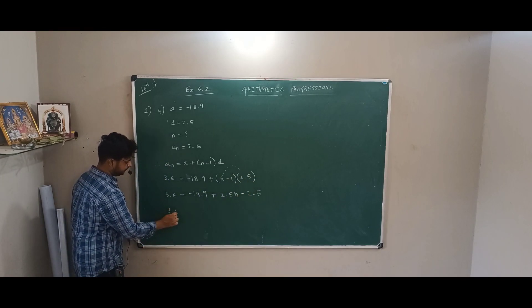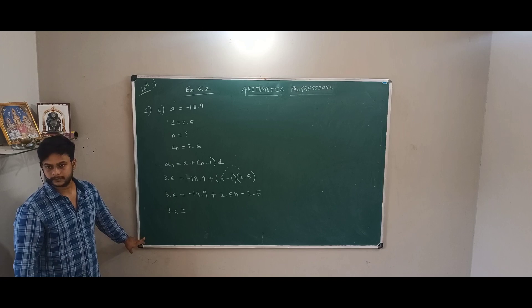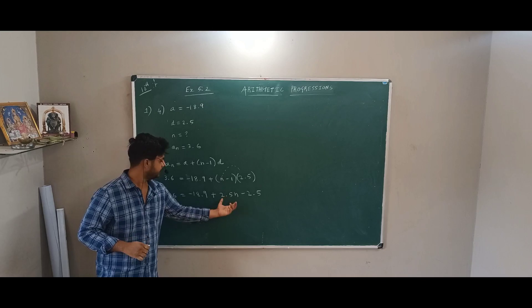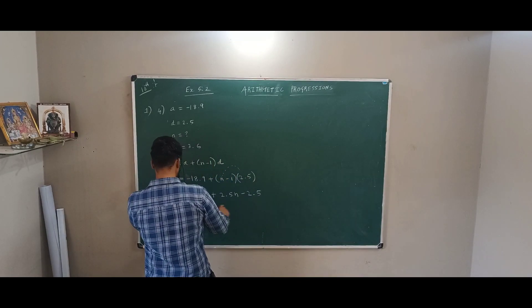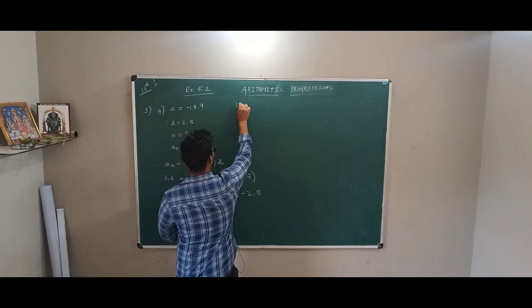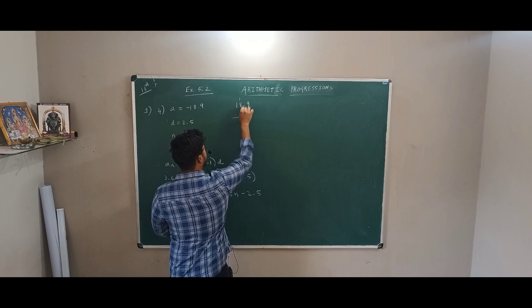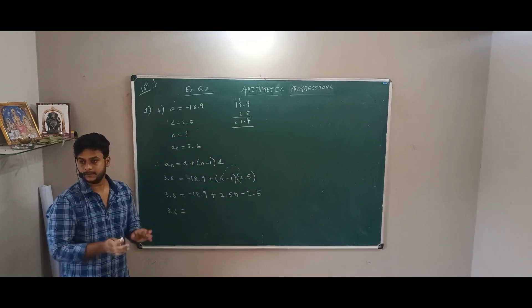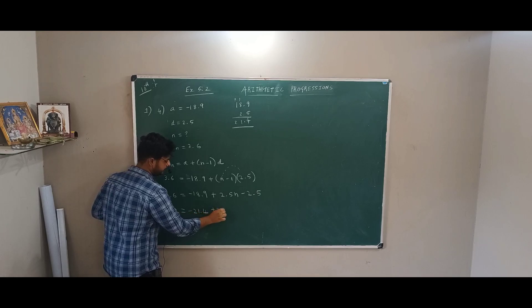Okay, next. So 3.6. Now which are the similar terms here? These are numbers, here I have variable, this is completely different. This and this are same, so I should add that. Minus 18.9, add that 18.9 and 2.5. See, both are minus, minus you should add, don't subtract. So 18.9 and 2.5, 9 plus 5, point, 8 to 10, 11. 21 point 4, that is in minus, so minus 21 point 4 plus 2.5N.